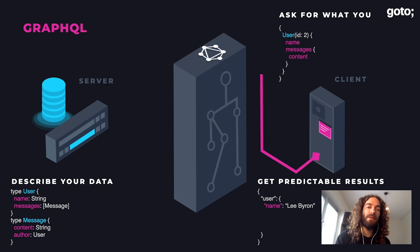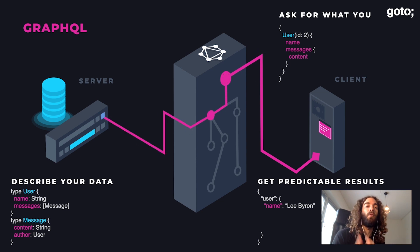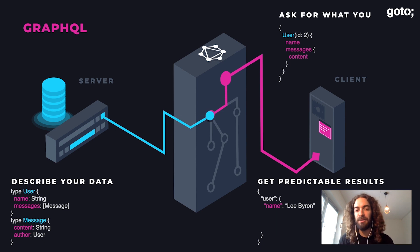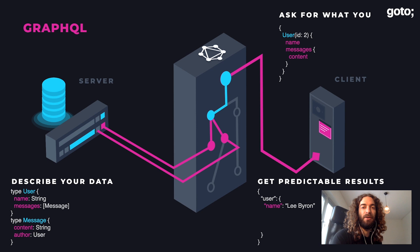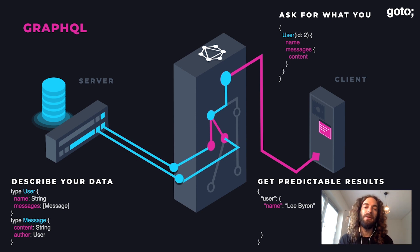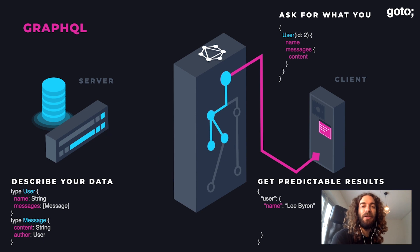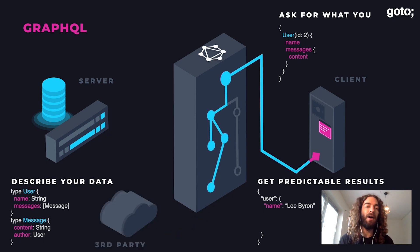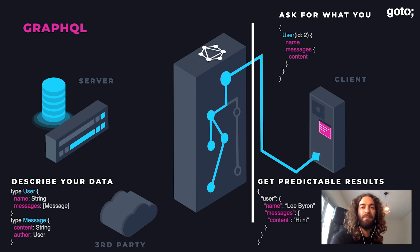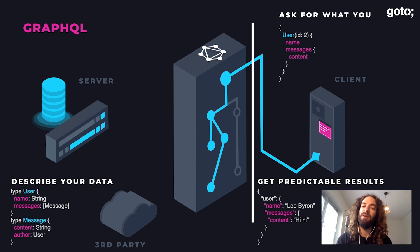But if we need something more complex — like the user's name and messages — we again send one single request. Then in parallel, GraphQL fetches the name and the messages. And let's say for each message we want the content, which maybe comes from a third-party API or WordPress or something like that — the client doesn't care, and the client will just get back one predictable result in one response.